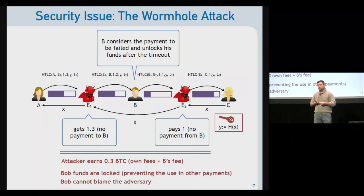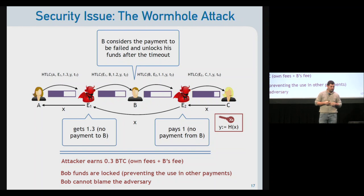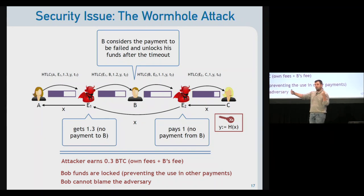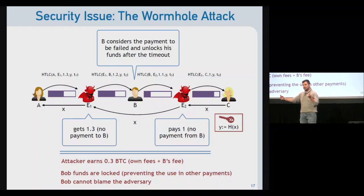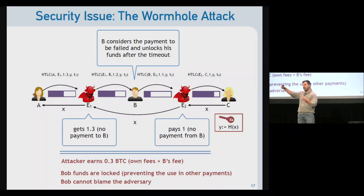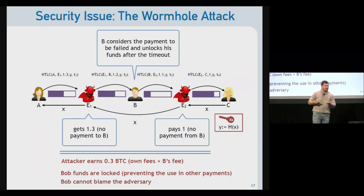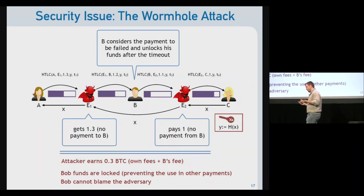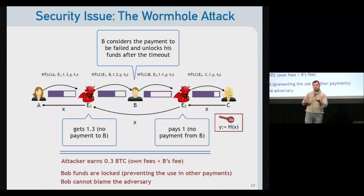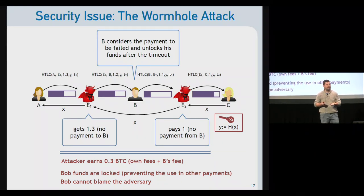There are further implications: Bob's channel funds are locked for the entire time-lock duration, preventing him from using those funds for other payments. Additionally, Bob believes the payment failed and has no way to blame the attacker — he doesn't even know the attack occurred.